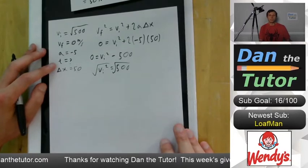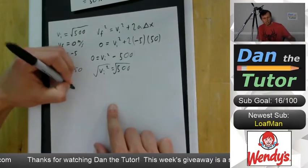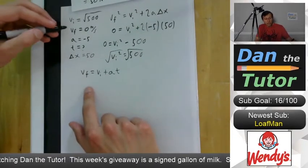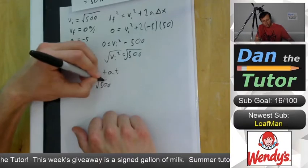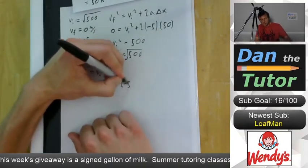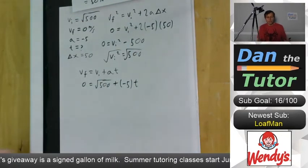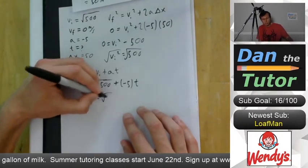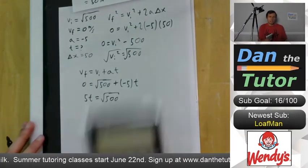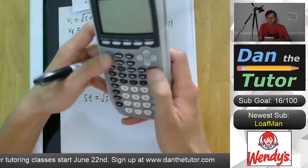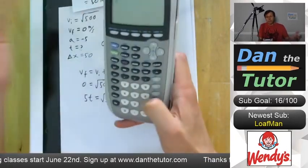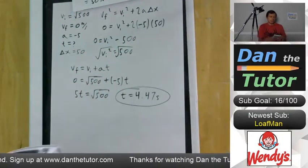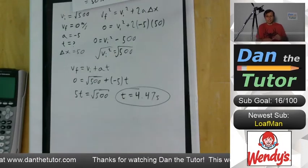Now solving for time, using v-final = v-initial + a·t: zero equals √500 + (−5)·t. Adding 5t to both sides: 5t = √500. Dividing: t = √500 / 5 = 4.47 seconds. That's how long it takes the truck to stop in order for the apples not to slip.